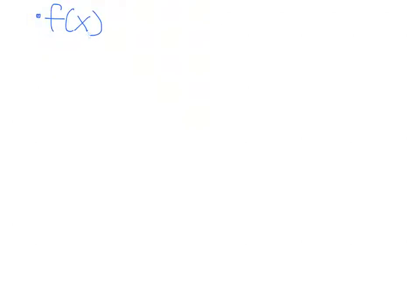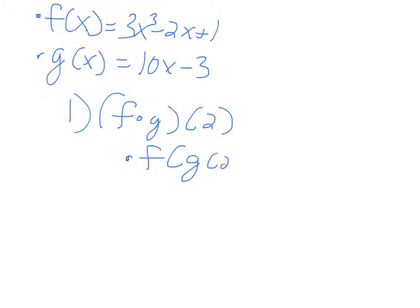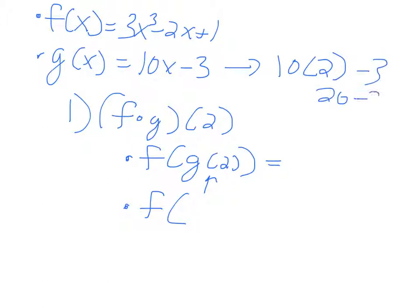Now let's do a more concrete example. Say f of x equals 3x to the third minus 2x plus 1, and g of x equals 10x minus 3. The problem asks you to find f of g of 2. Follow the same steps — solve for the inside first. So what is g of 2? Plug in 2 for x: 10 times 2 minus 3, which is 20 minus 3, which equals 17.